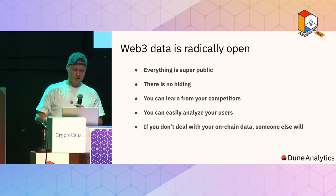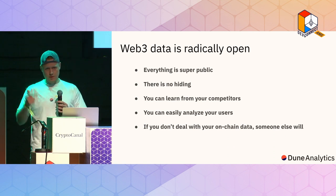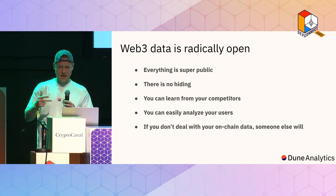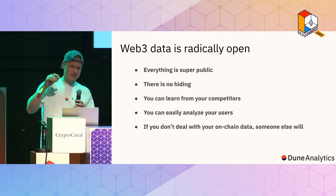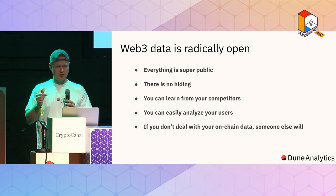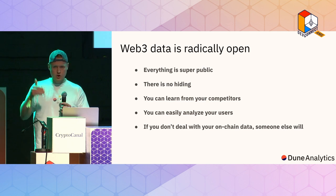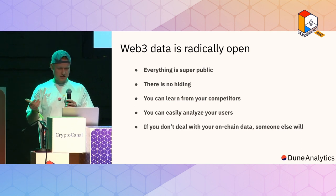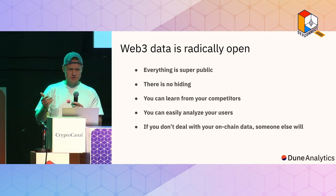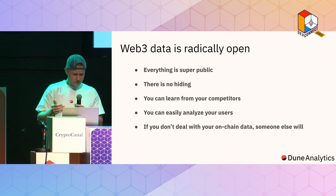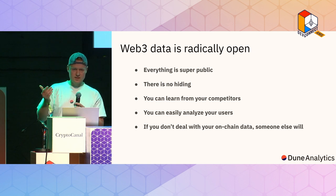That's pretty radical — I can do this for all different projects. Everything is super public; you can't hide anything. I can do this for Uniswap, for Curve, and make comparative analyses — directly compare products to each other — and there's nothing a competitor can do to stop me from analyzing their data. If something fails, you fail in public. If something does well, you can show your data and everyone can verify it. You can learn from your competitors.